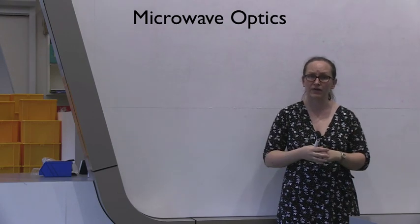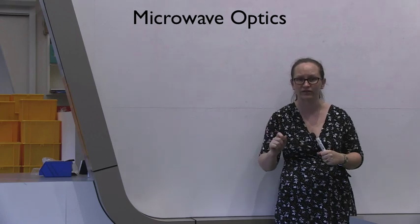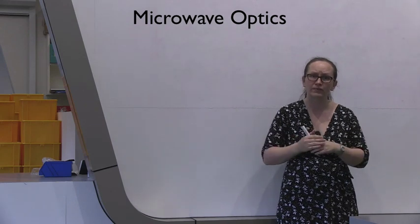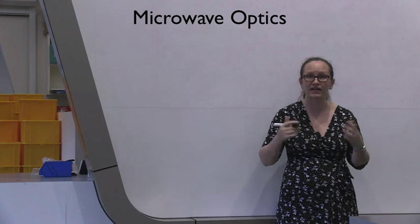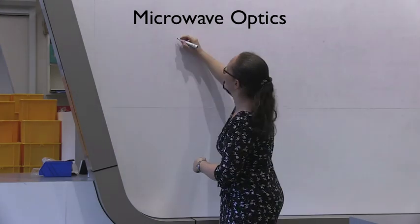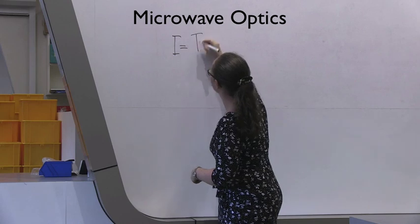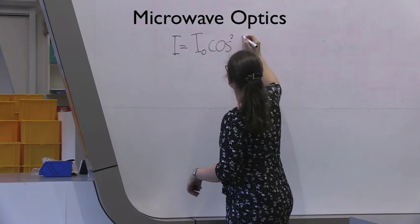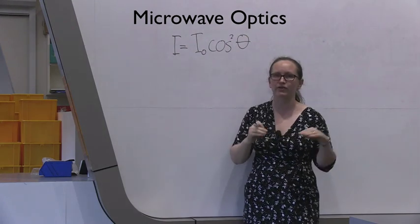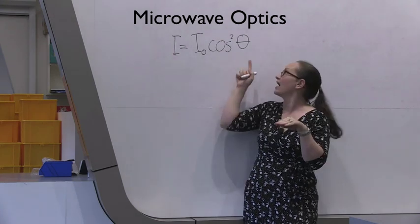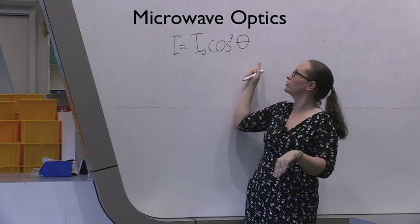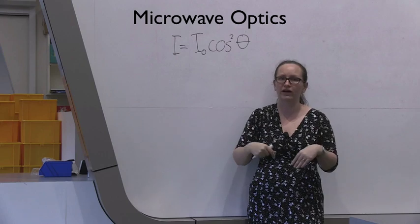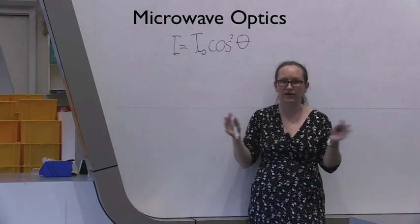In the second part of the experiment, you're going to be investigating polarisation, which is a really interesting part of electromagnetic radiation. You're going to be conducting an experiment to investigate Malus' law, which tells us that the intensity of light is equal to the initial intensity, the intensity at the source, times cos squared theta, where theta is the angle between the polarisation of the light and the polariser. You'll be observing how the intensity changes as you add additional polarisers, and as you change the angles between the polarisers.